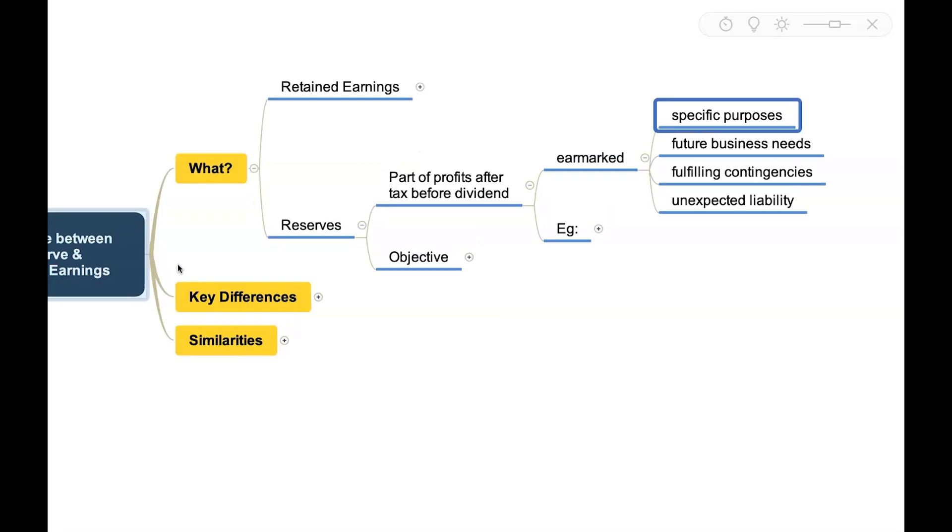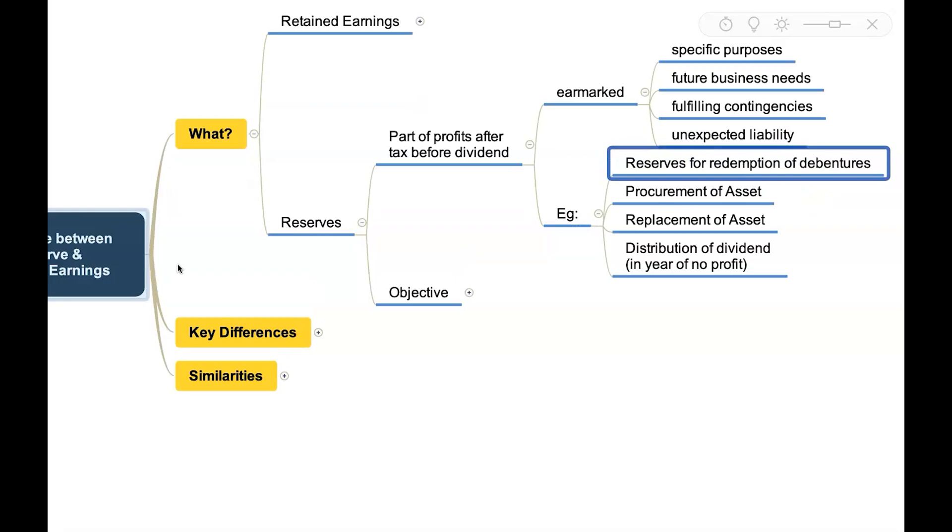For meeting some future business needs or for fulfilling contingencies or for meeting some unexpected liability. They can be in forms like reserves for redemption of debentures, reserves for procurement of asset, replacement of asset, or even for distribution of dividend in the year of no profit.